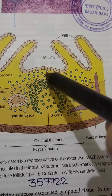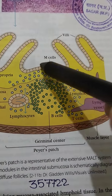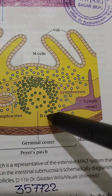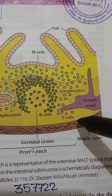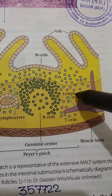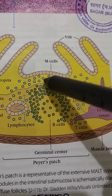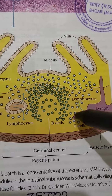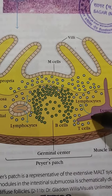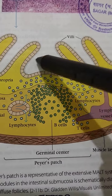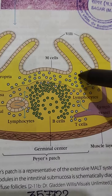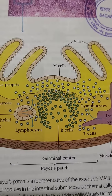These are germinal centers in the intestinal submucosa, and these are B cells and T cells in the germinal center, and these are lymphocytes. So lymphocytes — B cells and T cells together — form the immune cells or immune function organs.